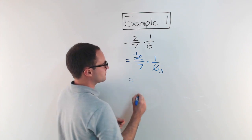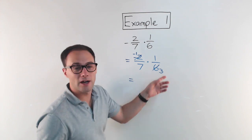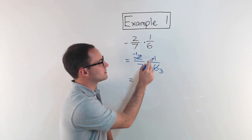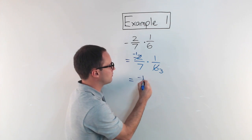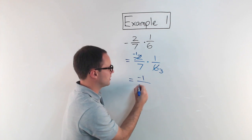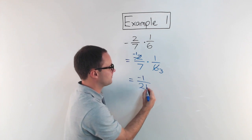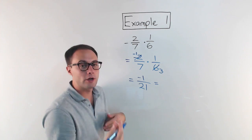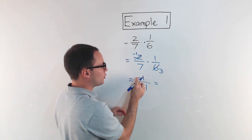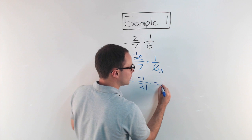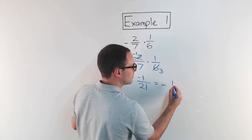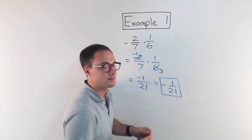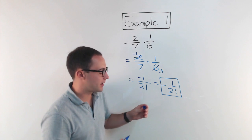Now there's nothing else to simplify, so I'm just going to multiply straight across. Negative one times one is negative one, and seven times three is twenty-one. I'll pull the negative out front, so the final answer is negative one over twenty-one.